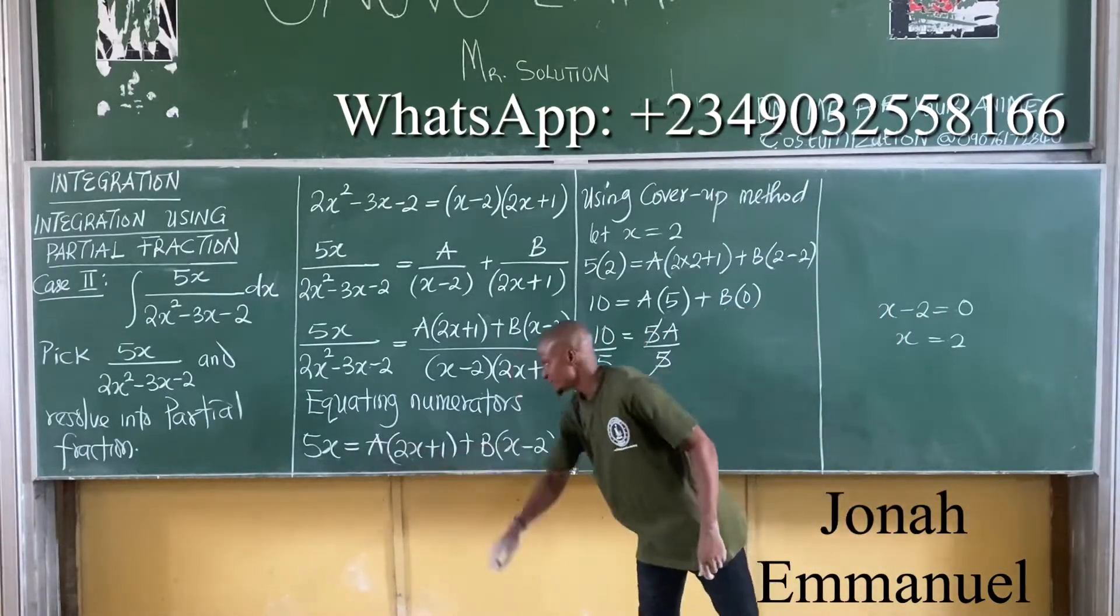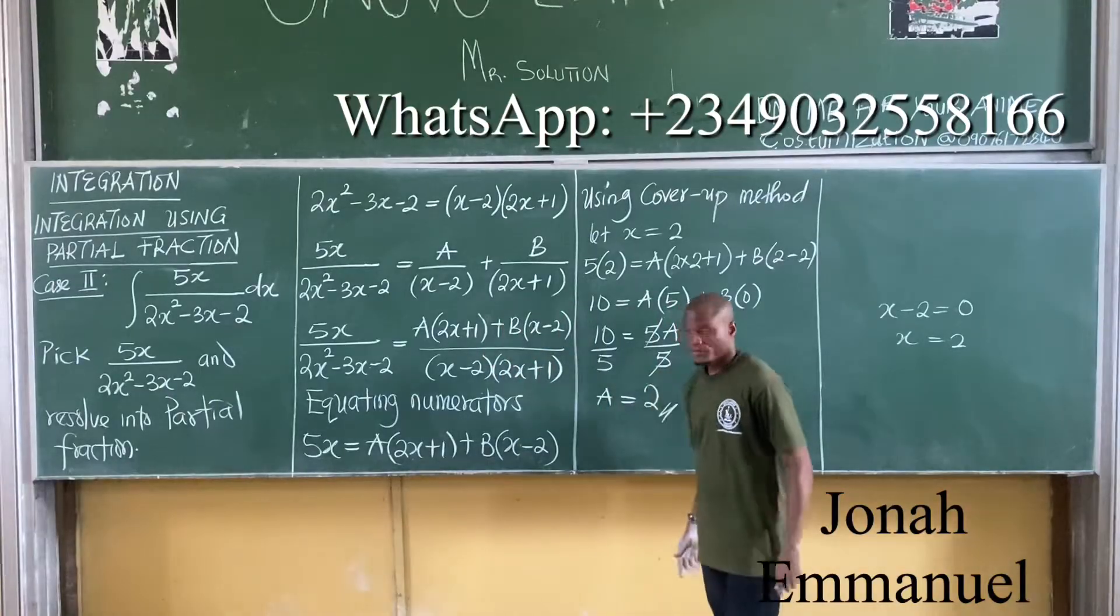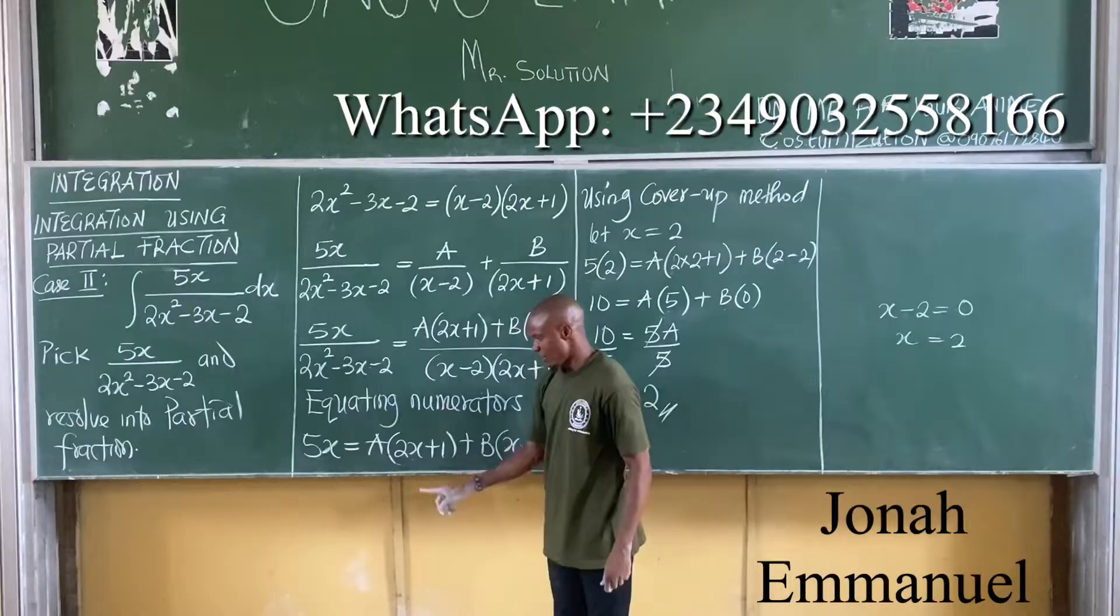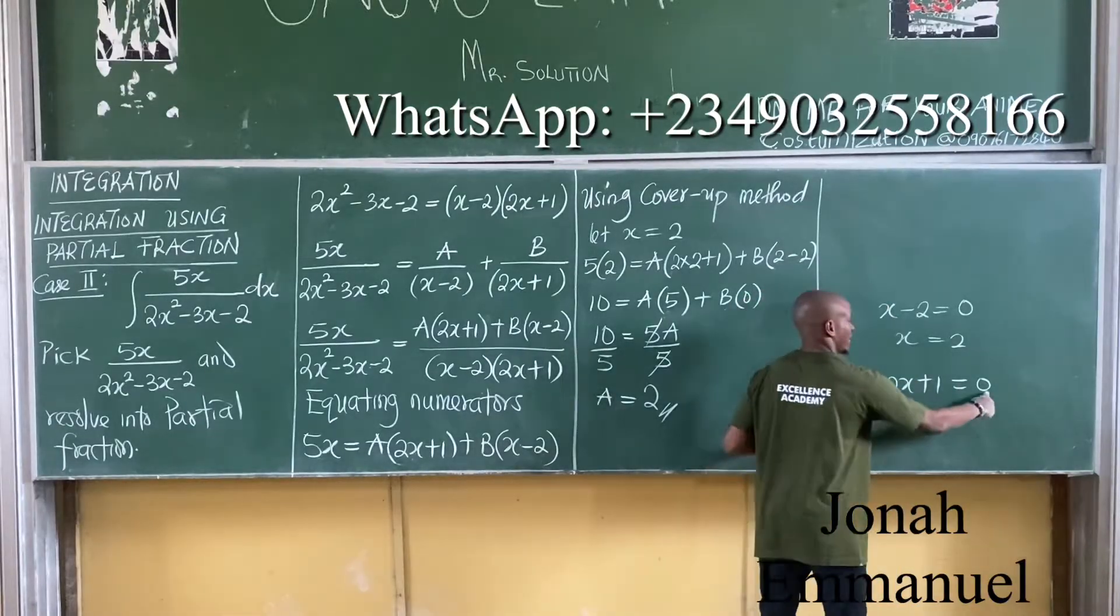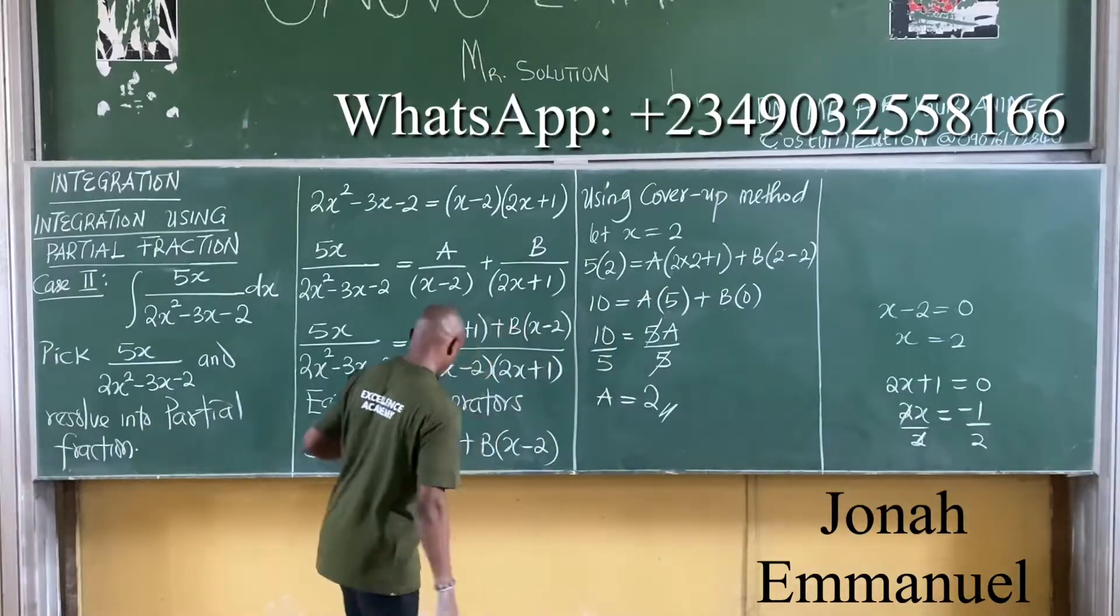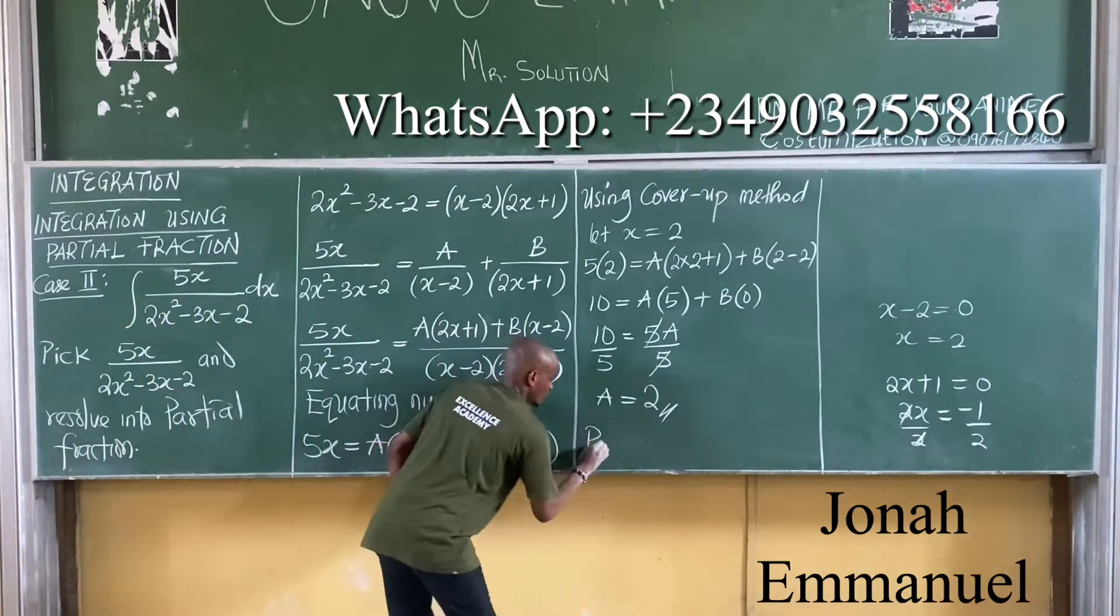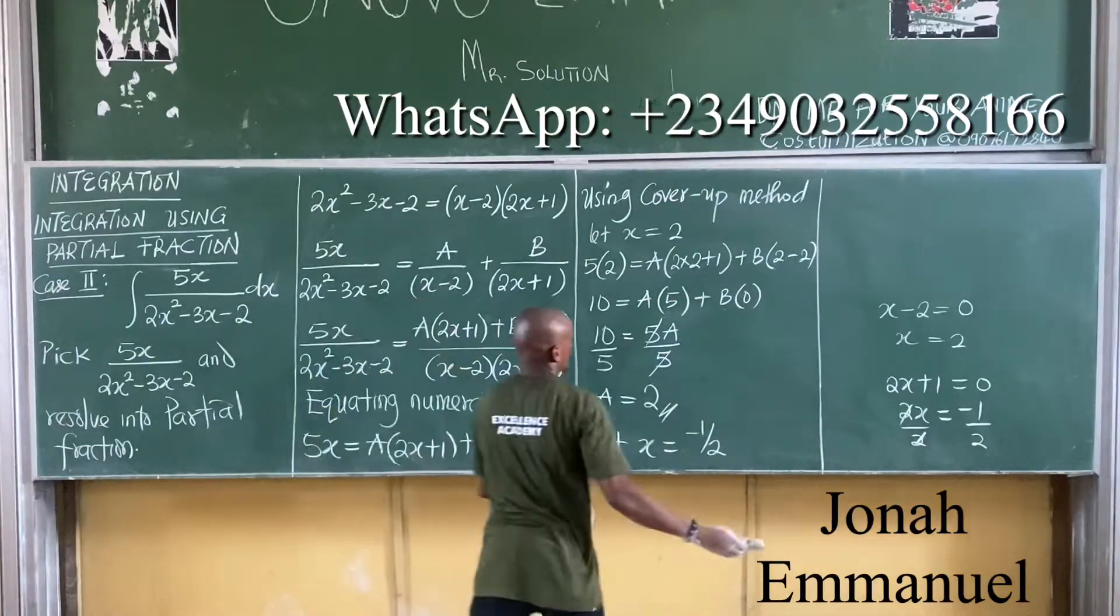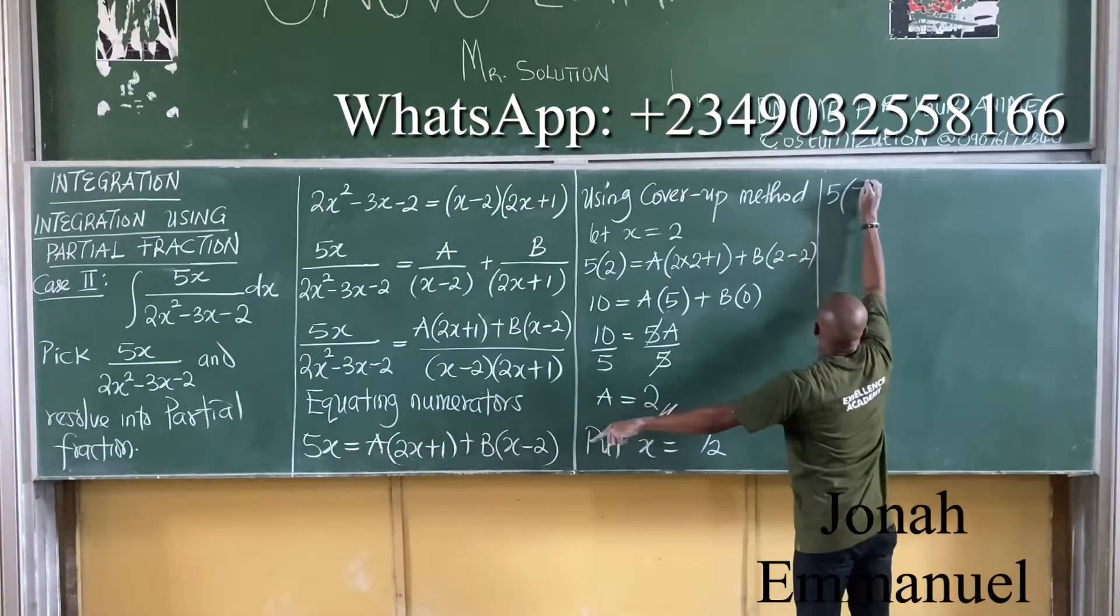Let's use this cover up to eliminate this one here so we can get B. To eliminate A here, we equate this to 0. So equate 2x plus 1 to 0. I'll have that 2x plus 1 is equal to 0. Get x here. Move this to the other side. 2x is equal to minus 1. Divide by 2. So if I put x as minus 1 over 2 into this equation, it will eliminate A and give me value for B. So put x as equal to minus 1 over 2 into this equation.